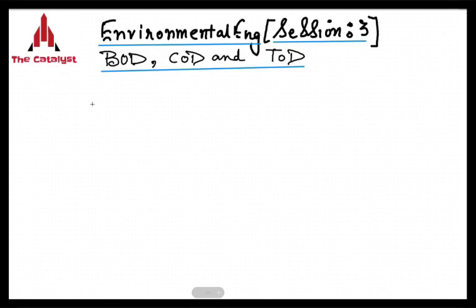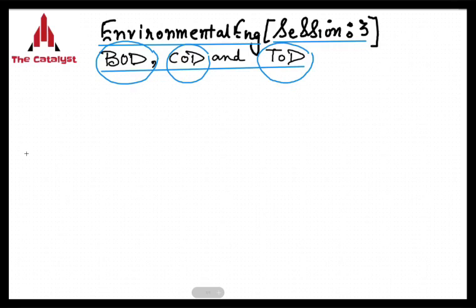This is session 3 of environmental engineering. Today we will be dealing with one of the most important topics in this subject — the calculations and determination of BOD, COD, and TOD. Let's first understand what exactly these are and why they are important.